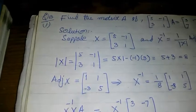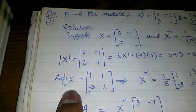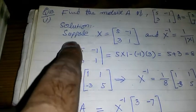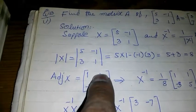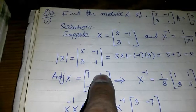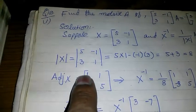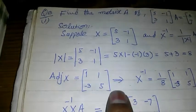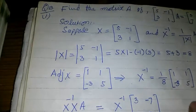The adjoint of X is found by swapping the first and last elements and changing the signs of the other two. We get [1, -3; 1, 5]. This implies X inverse equals 1/8 times [1, -3; 1, 5].